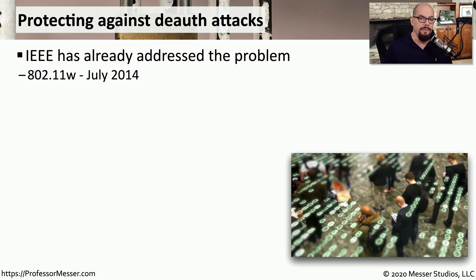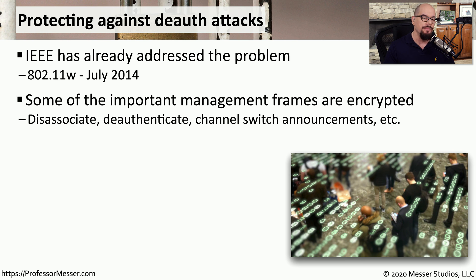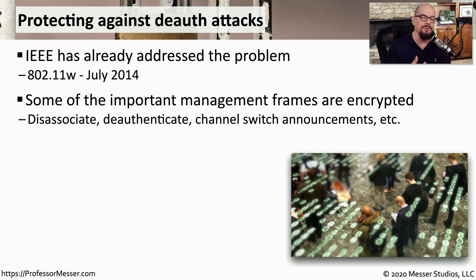Obviously, this is a significant vulnerability, and the IEEE has already made changes to the 802.11 specification to address it. The update was made in the 802.11w update, made available in July of 2014. Now some of the more important management frames are encrypted — things like disassociation, de-authentication, and switching between channels — all sent over a protected channel instead of in the clear. This also means that a third party on the network would not be able to send these types of frames and remove you from the network.